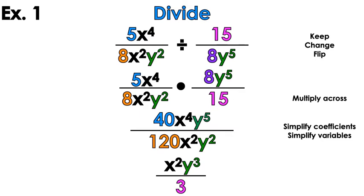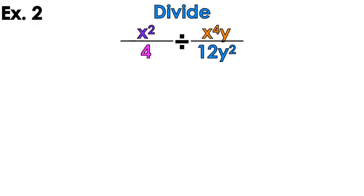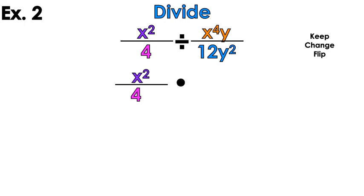So let's try it again. Example number two — I would pause the video and see if you can do it by yourself. We're going to keep, change, flip. Keep the first one, change the sign, flip. Now see if you can multiply across and simplify without my help. Pause the video, please. Okay, hopefully you paused the video — I know some of you didn't though. So anyway, we're going to multiply across.